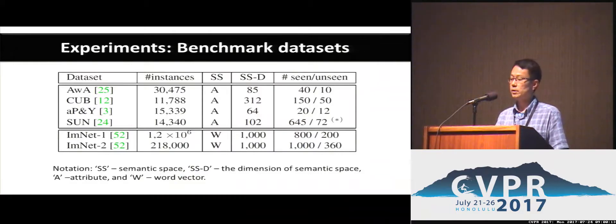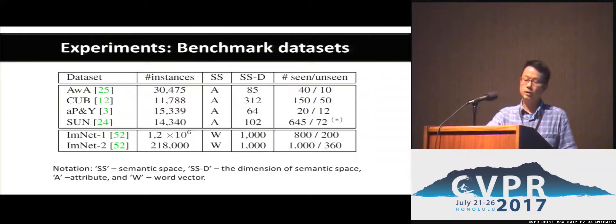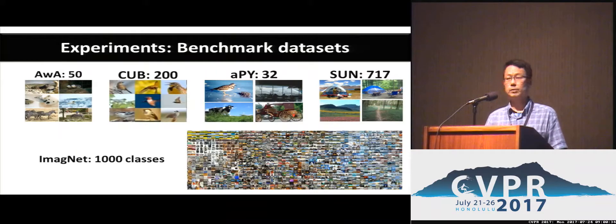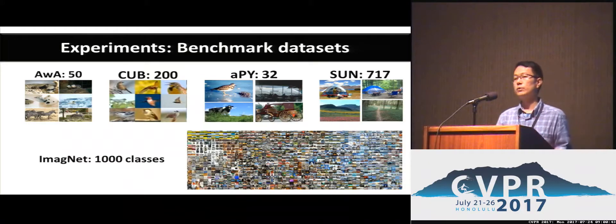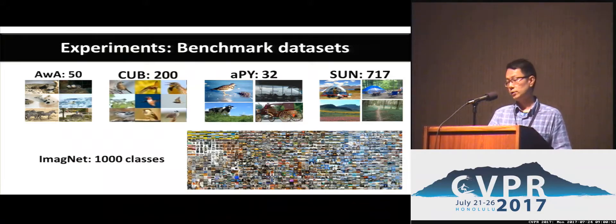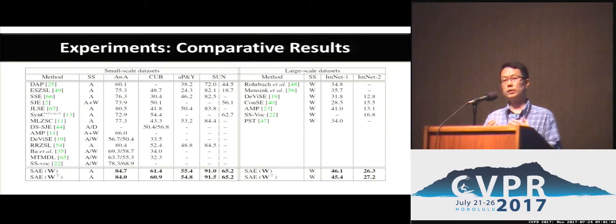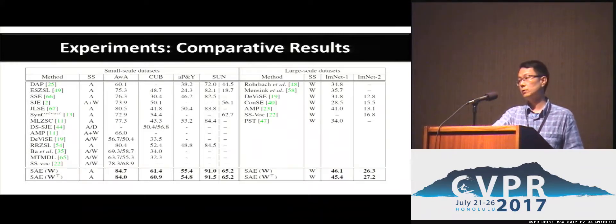We conducted experiments on six benchmark datasets, which basically include all the datasets people have used before on zero-shot learning. The semantic spaces we used are attributes A and word vectors W, and we only used one of them for fair comparison with published results. These datasets cover a wide range of recognition problems, ranging from animal classes to fine-grained bird recognition, to cross-dataset recognition problems A-Pascal and A-Yahoo, and also the largest ImageNet classification task. Looking at the results, this table includes comparative results from our model compared to most existing models, including those published at CVPR. Our model SAE achieves the best result on all six benchmark datasets.